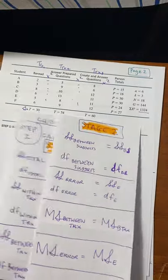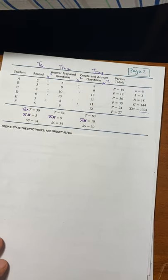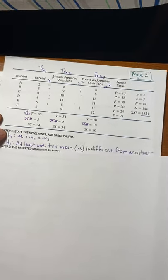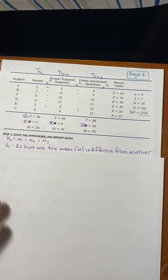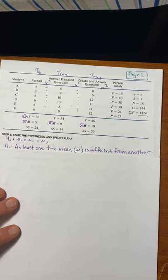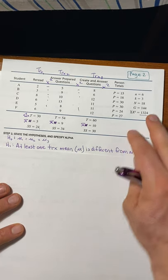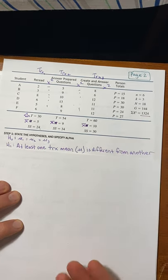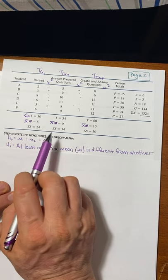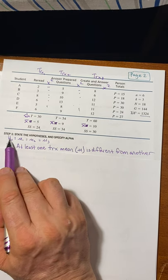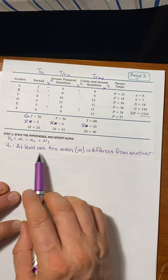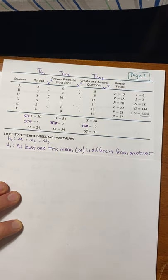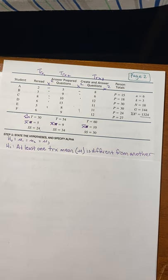Let's start with step one: the hypothesis statement. It's more or less the same as in the Chapter 12 ANOVA — you're still comparing the population means of the three different groups. The null hypothesis states there will be no difference between the three different means. The alternative hypothesis states there will be at least one difference between the three means.